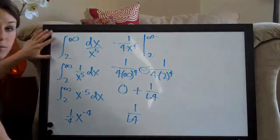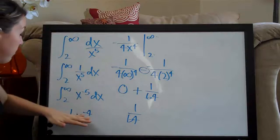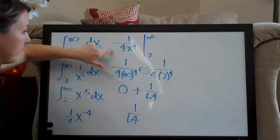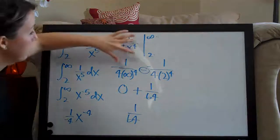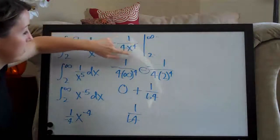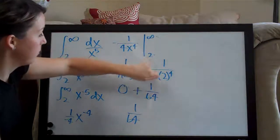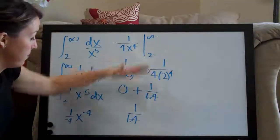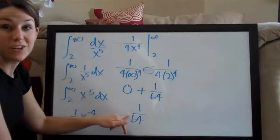So all you do when you have a problem like this with a range here is evaluate the integral, which I did here. I finally got to this point and then that's when you bring back in the two to infinity and you just evaluate on this range. And again, that's the top term here minus the bottom term here. And then you simplify and hopefully you end up with a definite answer like one over sixty-four.